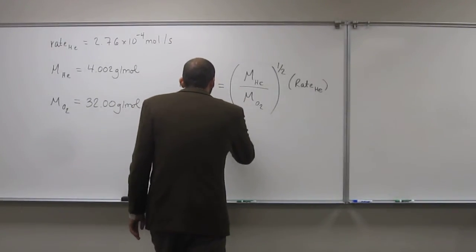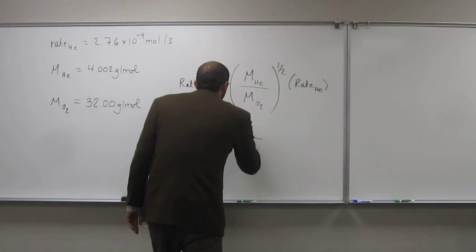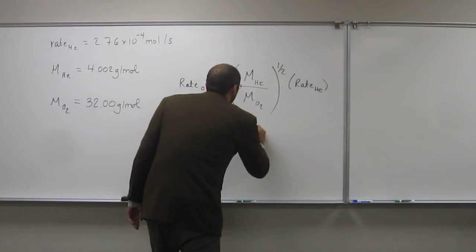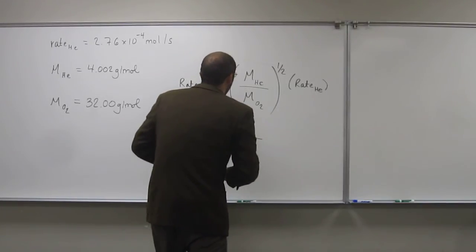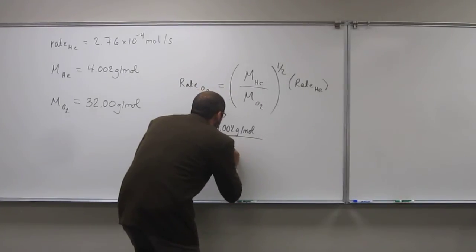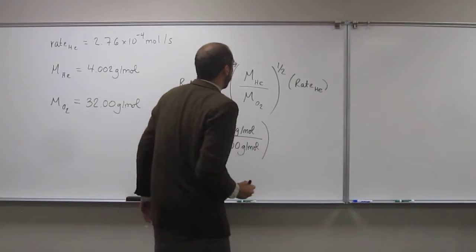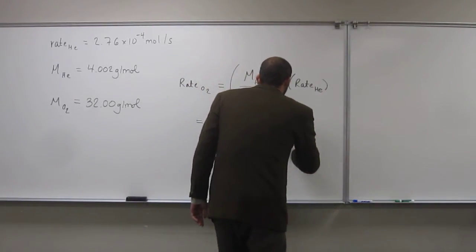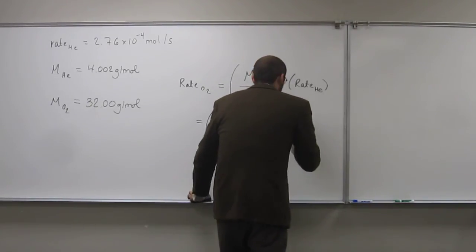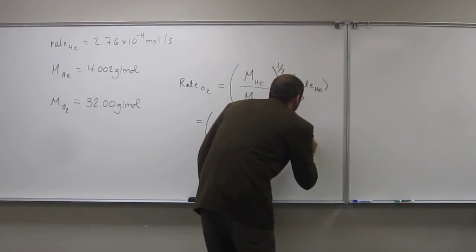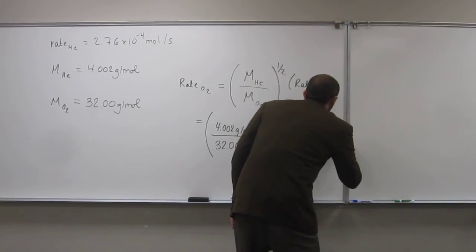So, just a plug-and-chug problem. So, molar mass of helium, 4.002 grams per mole. And the molar mass of oxygen, 32.0 grams per mole. Like that. So, the one-half times the rate of helium, which is going to be 2.76 times 10 to the negative 4 moles per second.